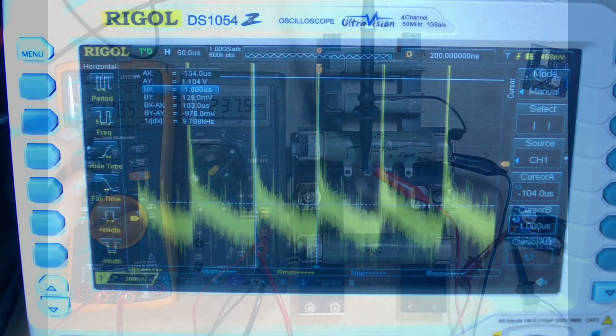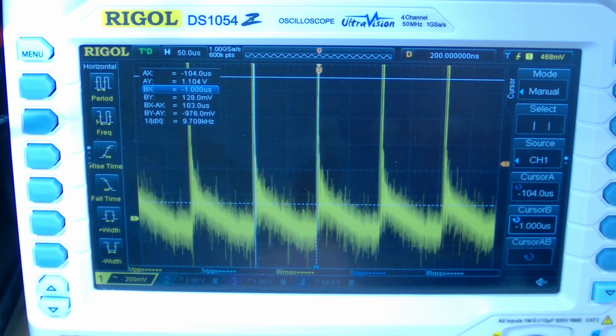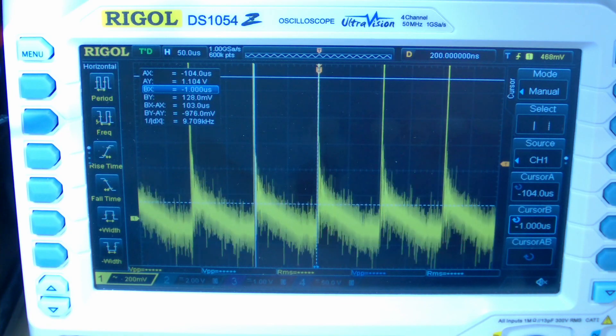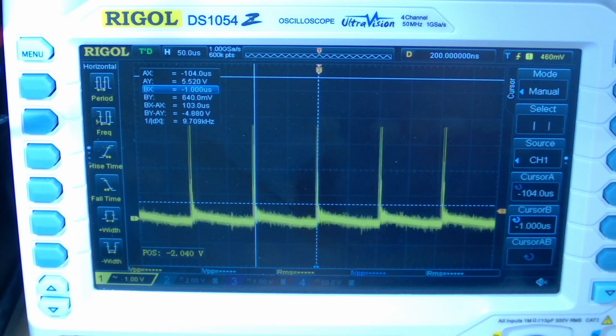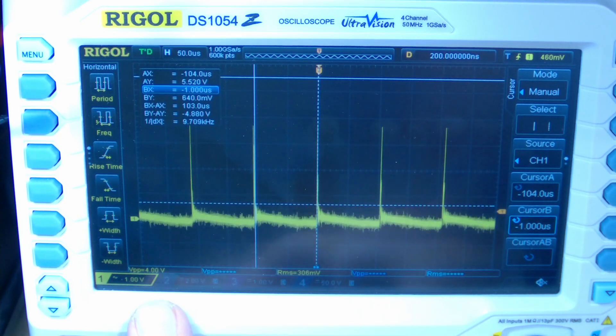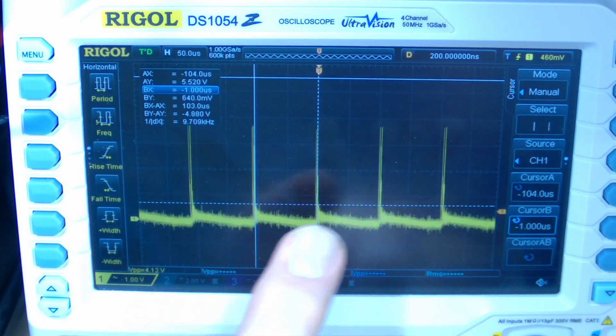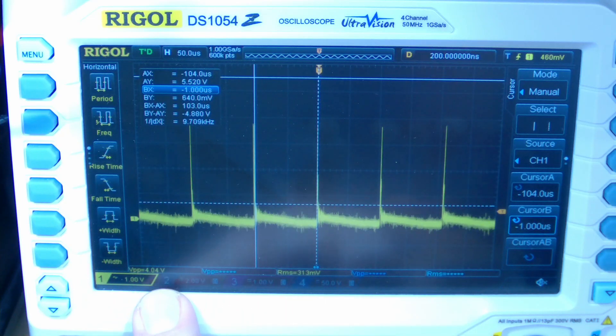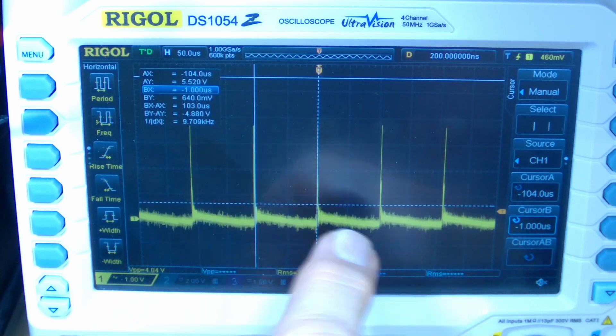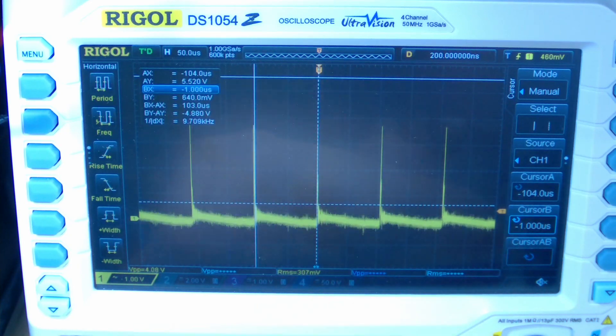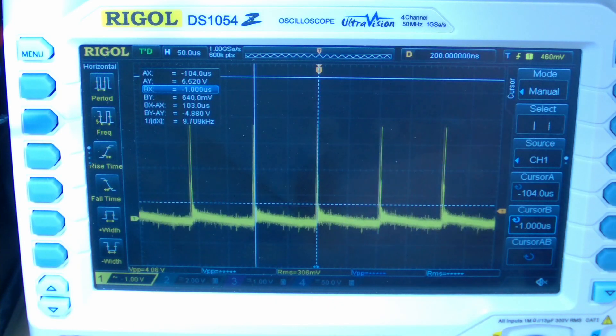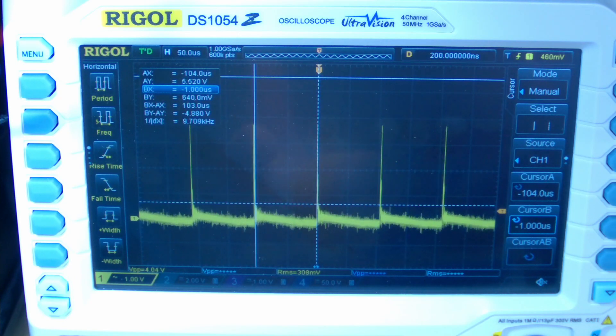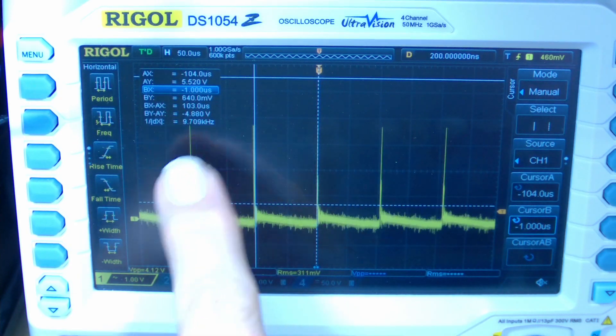And over here on the scope, what you're seeing is we now have a 4 volt peak up here. This peak to peak spike is now 4 volts. So it's drawing more, ultimately it's drawing more current because of that peak there. So if we wanted to get a lot of current out of this power supply, we're going to deal with a lot of noise at 7.5 kilohertz.